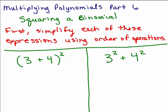This is part 6 of Multiplying Polynomials. We'll be squaring a binomial, but first let's simplify each of these expressions using the order of operations. You might want to put this on pause and try it yourself first.